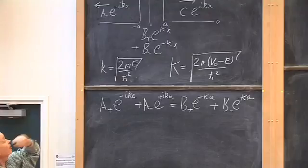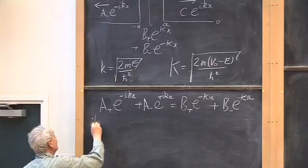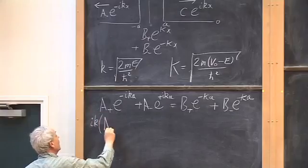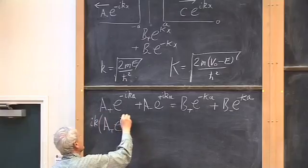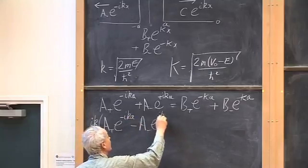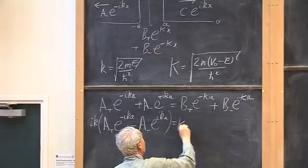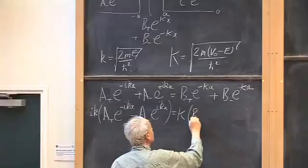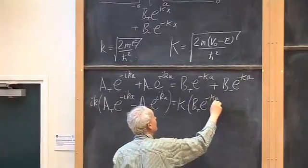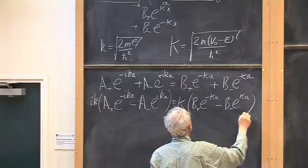We also require continuity of the gradient of the wave function at x = −a. Taking the gradient on the left and evaluating at x = −a gives: ik(A₊ e^(−ika) − A₋ e^(+ika)) = K(B₊ e^(−ka) − B₋ e^(+ka)).